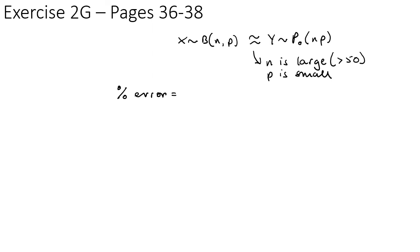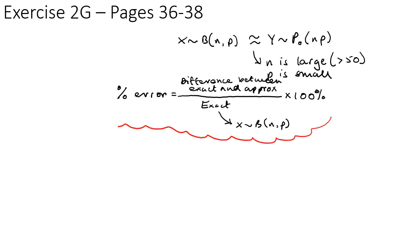The other thing they might ask you about is the percentage error. The percentage error is the difference between exact and approximation. The difference between your exact and your approximation divided by the exact value. In this case, you'll get the exact value from the binomial distribution, times by 100. You want to get a positive answer, so it depends on the question, but divide that by the exact answer from the binomial times by 100 percent, and you get a percentage error.